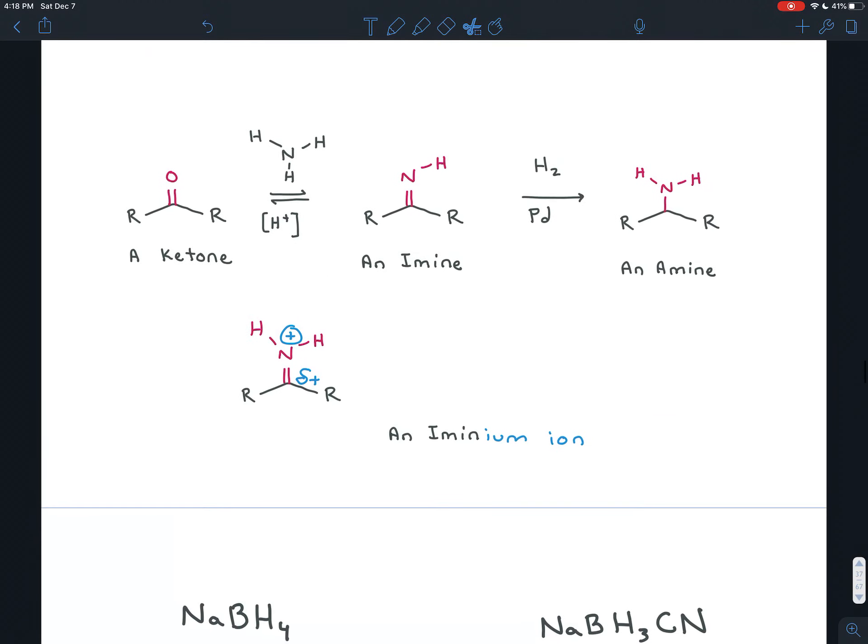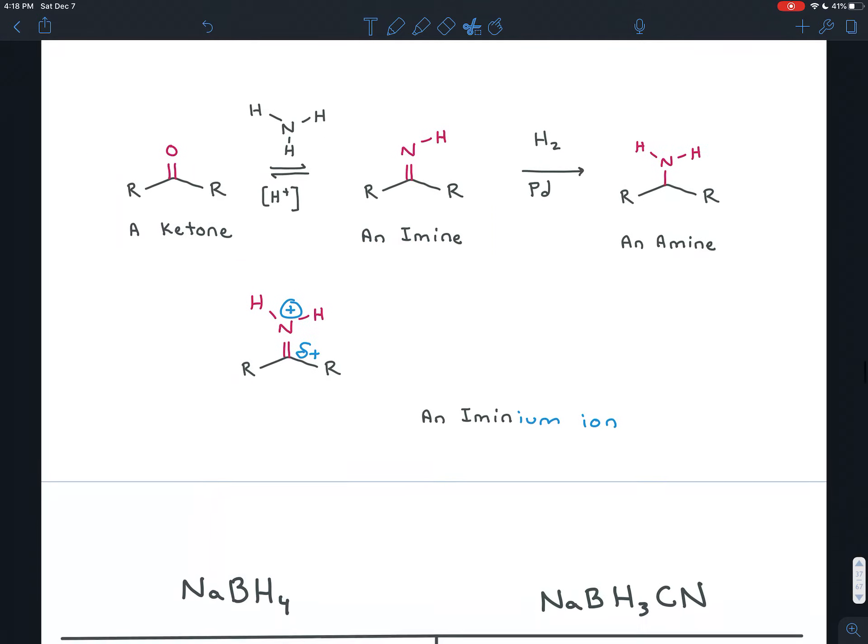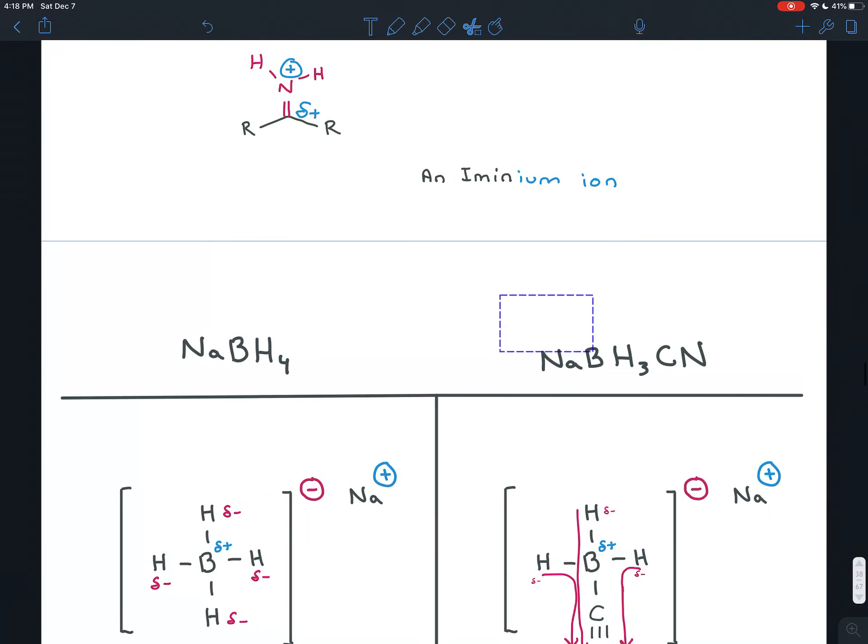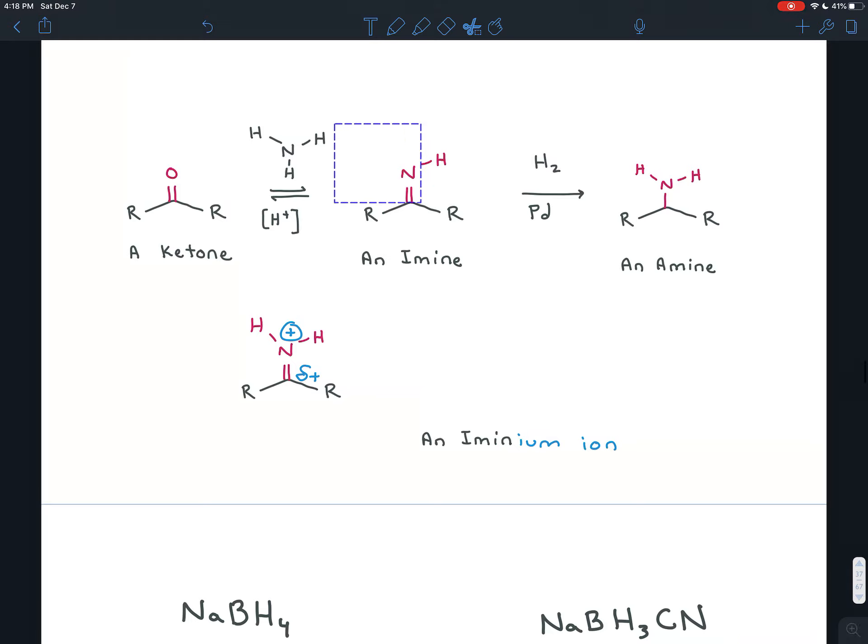So sodium cyanoborohydride, the hydrogens on it are such weak nucleophiles that they will not attack ketones, but they will attack the carbon on this iminium ion that's formed as the ketone is turned into the imine. And so sodium cyanoborohydride selectively reduces the imine to an amine without affecting the ketone at all.